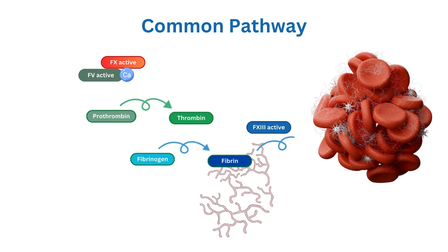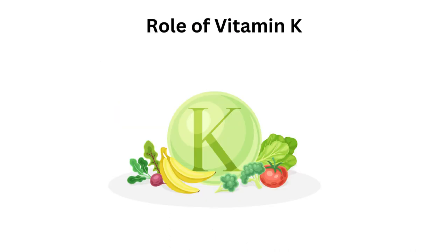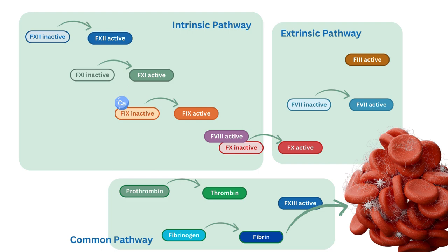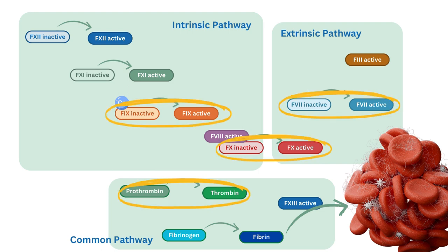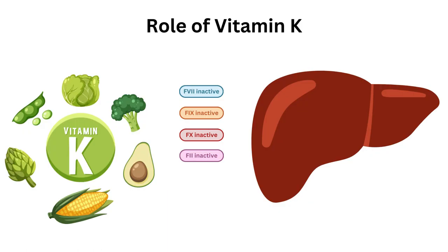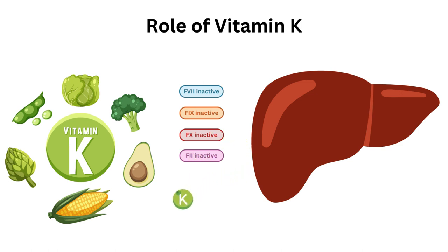Vitamin K is an essential nutrient that plays a crucial role in the coagulation cascade. It is required for the synthesis of several clotting factors in the liver, including Factors 2, 7, 9, and 10. These clotting factors are produced in the liver in their inactive form. Vitamin K then modifies these proteins, and these modifications are necessary for the activation of these clotting factors during the clotting cascade. Without sufficient Vitamin K, these clotting factors cannot be properly activated, leading to impaired blood clotting and an increased risk of bleeding disorders.